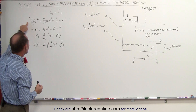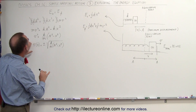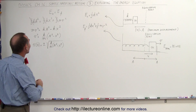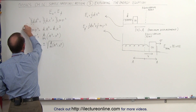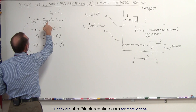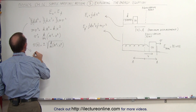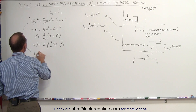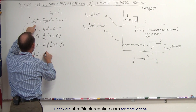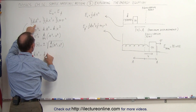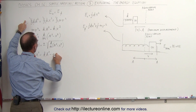We can also solve this equation for x. When we do that, we isolate kx squared and move mv squared to the other side, so we get kx squared is equal to kA squared minus mv squared.